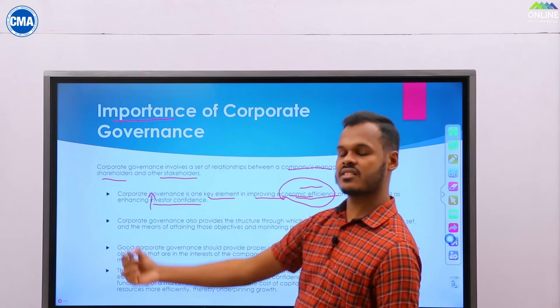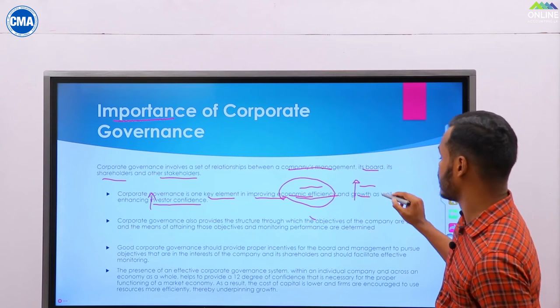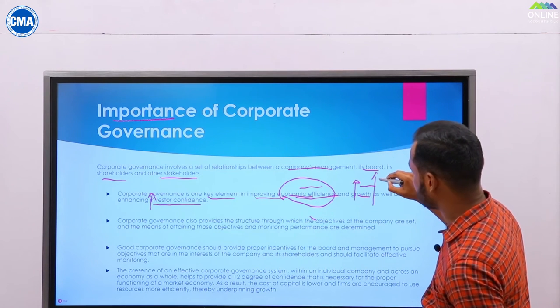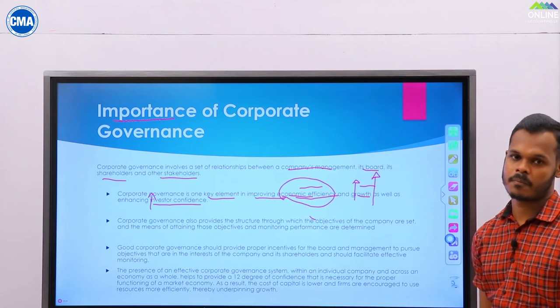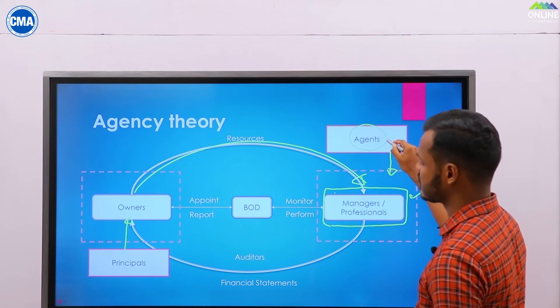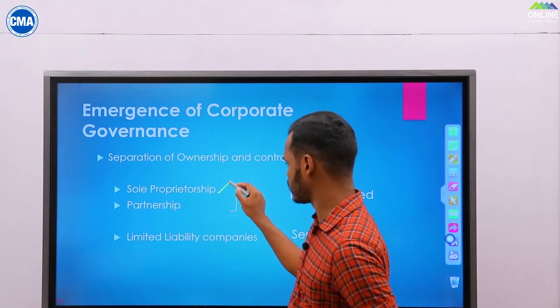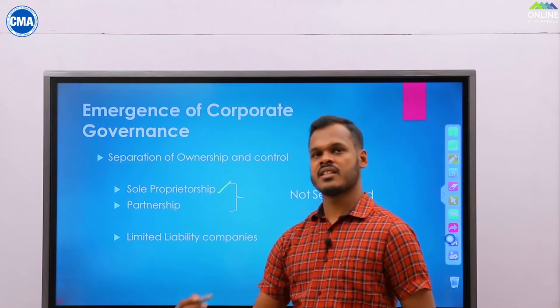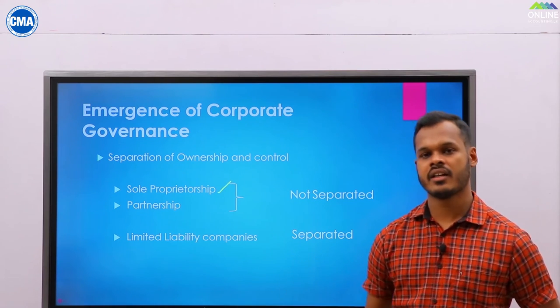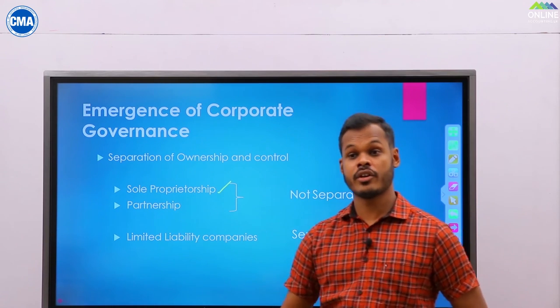Investors are much more interested in investing in your company when growth is accelerating. The principal appoints the agent to act for the best interest of the principal. Originally, the person who started a business operated it, managed it, and enjoyed all the profits.